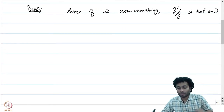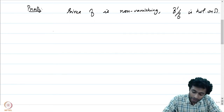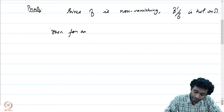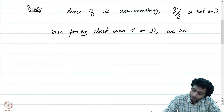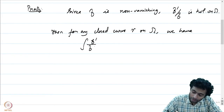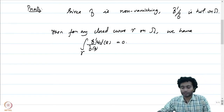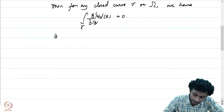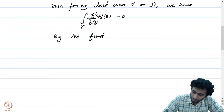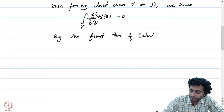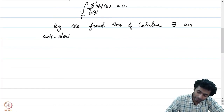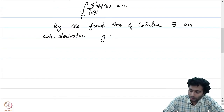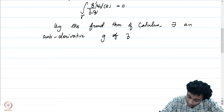Since f'/f is holomorphic on omega and omega is simply connected, for any closed curve gamma on omega we have the integral of f'/f over gamma equal to 0, by Cauchy's theorem. By the fundamental theorem of calculus, there exists an antiderivative g of f'/f on omega.